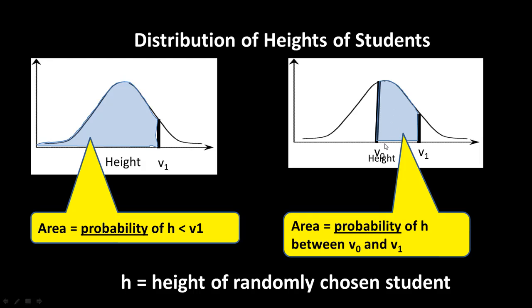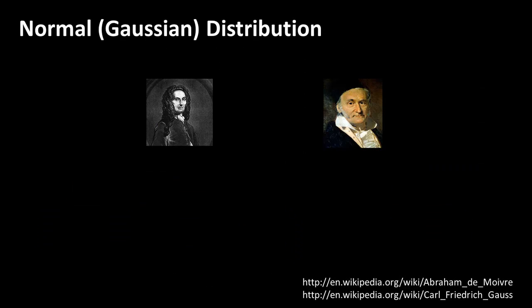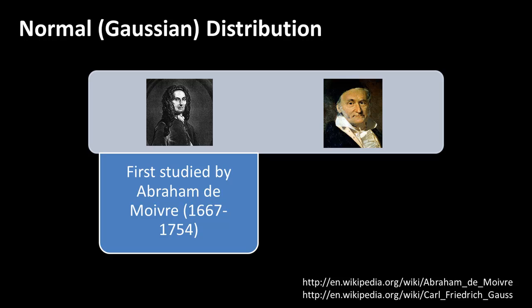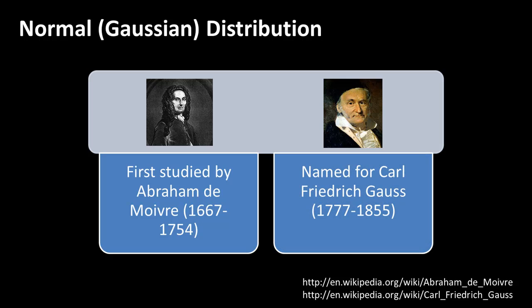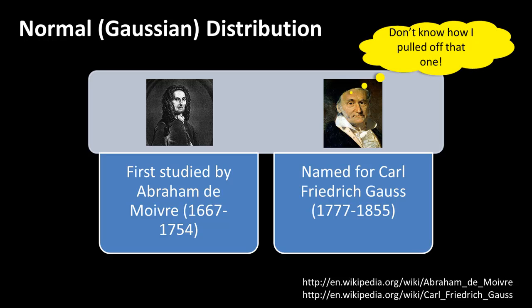The area under the curve represents the probability of H — the probability of a value falling between v0 and v1, or the probability of people whose height is between v0 and v1. You've probably heard about the Gaussian distribution. It was actually initially studied by de Moivre, who lived from 1667 to 1754, but for some reason it has been named after Gauss. It is referred to as the normal distribution, or more commonly the Gaussian distribution.